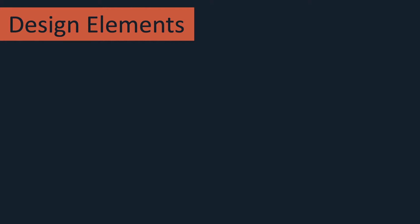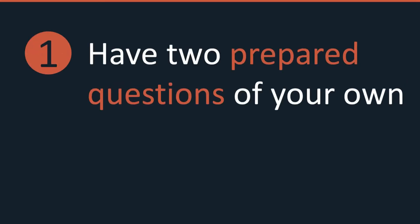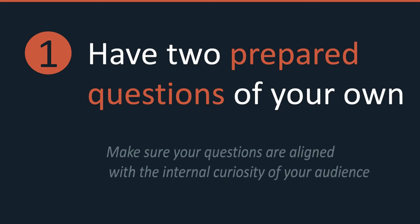Incorporate these two design elements into the preparation for your talk's Q&A session. Number one: have two prepared questions of your own ready to go in case there are none from the audience. So when Q&A opens up and there's quiet, nobody asking any questions, that's when you're going to jump in with a very interesting question — something that your audience is going to be curious about — and answer that question. You need to make sure that whatever question you bring up is aligned with the internal curiosity of your audience.